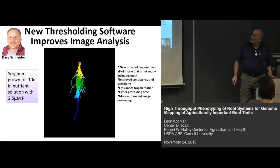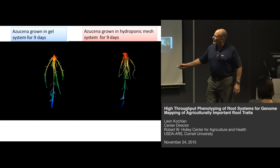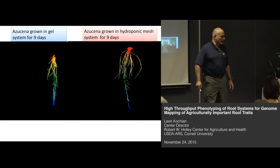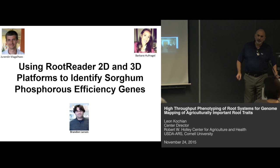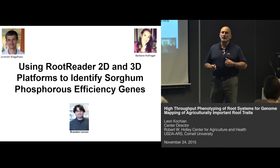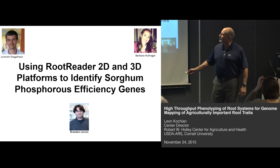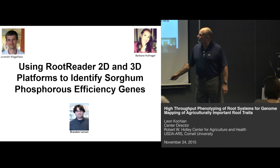Azusena grown in gel and grown in the hydroponic mesh system shows pretty similar architectures, which is encouraging. We used this system to phenotype an association panel assembled by Juringer of US converted lines and some Brazilian lines. This was part of Barbara Huffnagle's PhD with Jura — she did the 3D root architecture work in our lab, working with technical scientist Brandon Larson, and it took about a year to do the 3D imaging of the association panel.